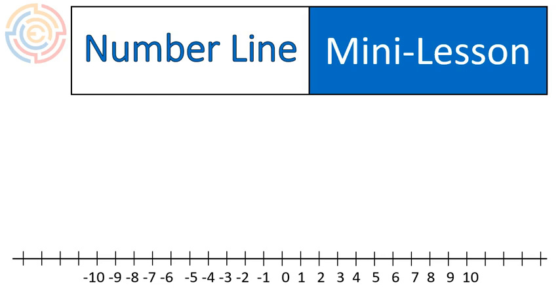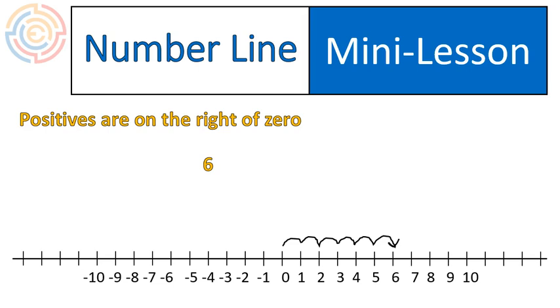When we have a number line, we're going to think about the numbers compared to 0. Positive numbers are on the right of 0. For example, if I had the number 6, I would start at 0 and go to the right, 6 spaces, and that's how I would label 6 on a number line.